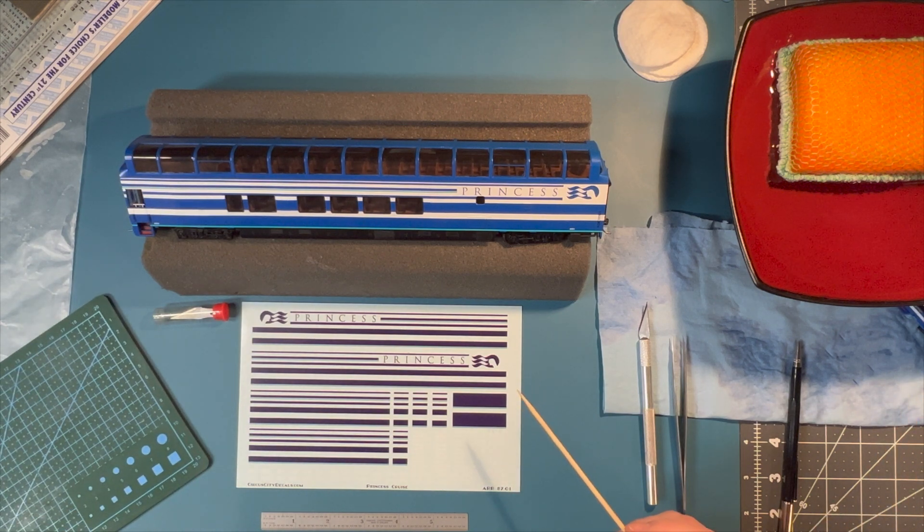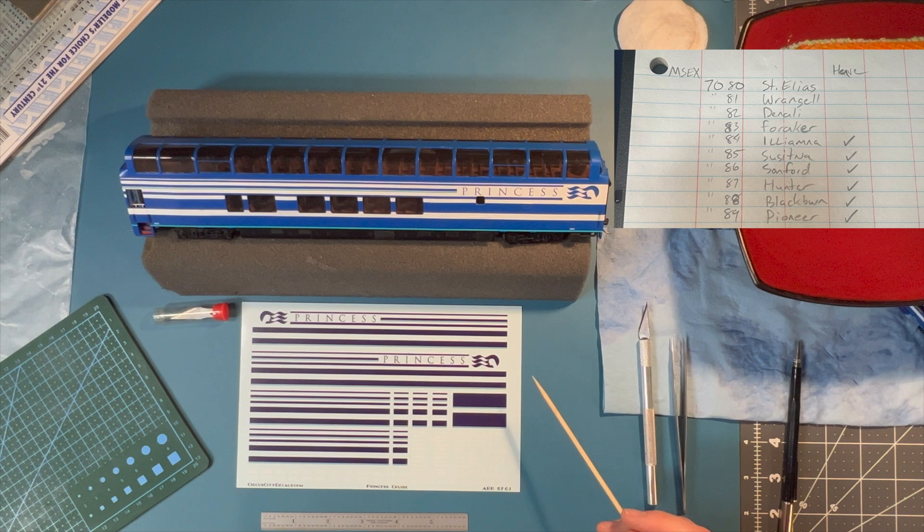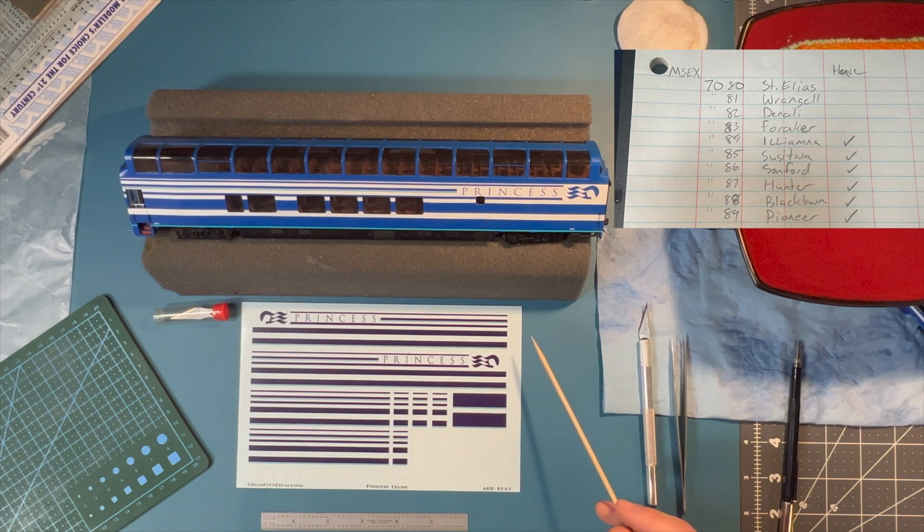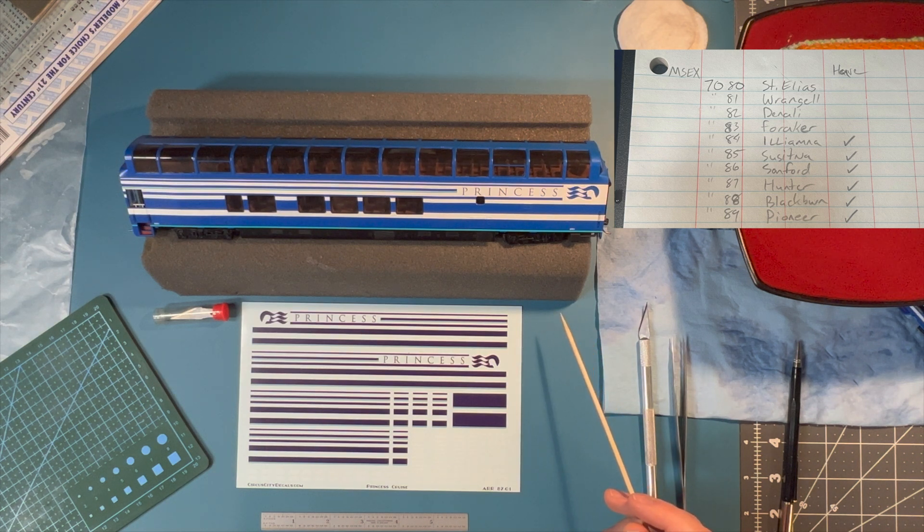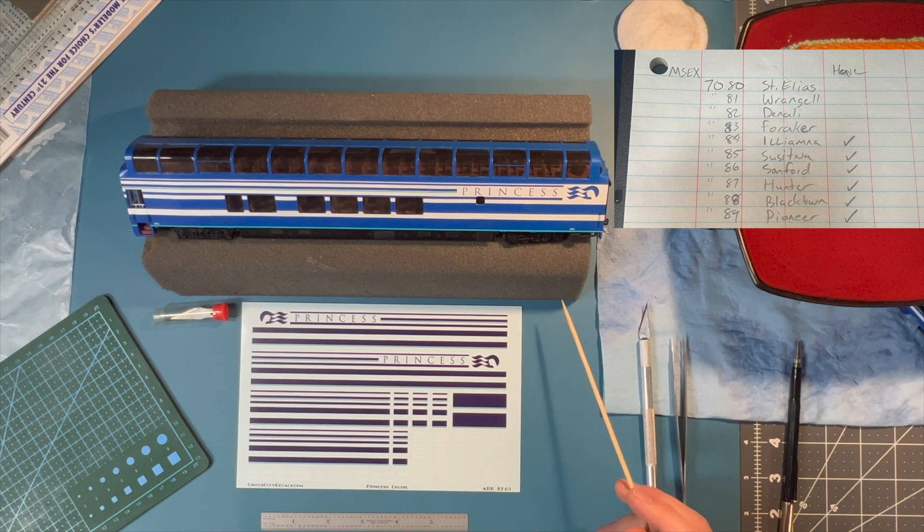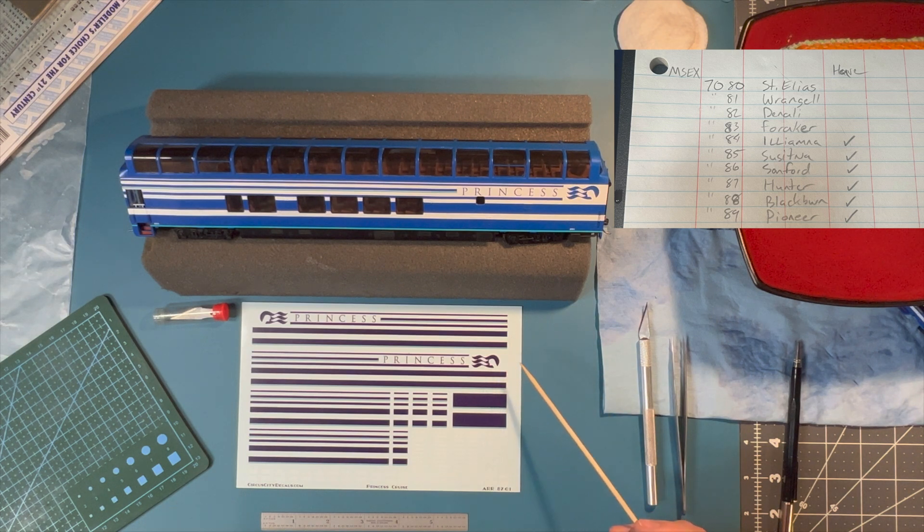So if I look at my list, which I'm going to superimpose the image here, there's the 10 names and the 10 car numbers for the full Princess Cruise Lines Denali Express set. So I originally had two of the Susitna number 7085, two of Sanford number 7086, and two of Pioneer number 7089. So for now, what I'm thinking I may end up doing is 7081 the Rangel, however that's pronounced. I'm probably butchering it a little bit. Denali and Foraker.